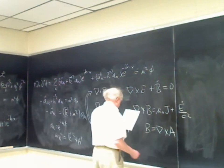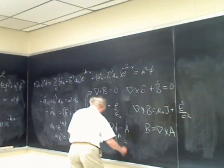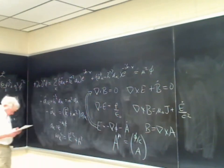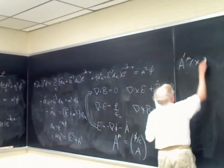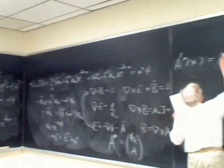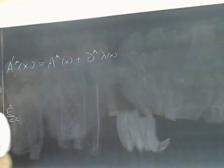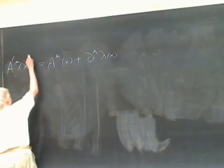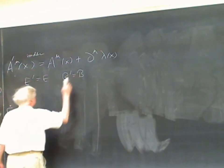The scalar and vector potentials form a four-vector A^μ = (φ/c, A). A gauge transformation is A'^μ(x) = A^μ(x) + ∂^μ λ(x), where λ is any scalar function of space and time. Under a gauge transformation, E and B don't change.